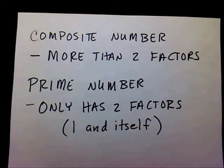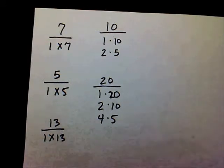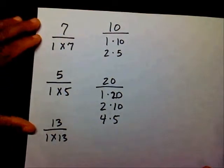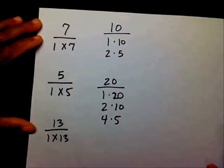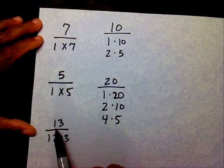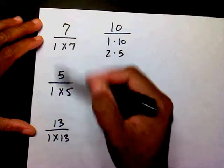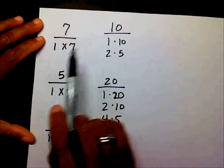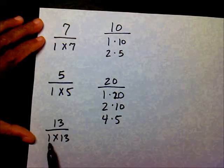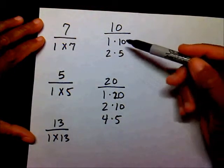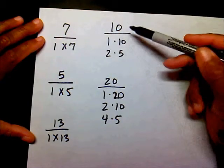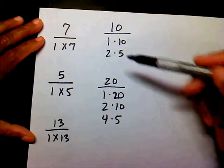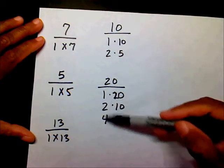I gave you some examples of some factors and prime numbers — some composite numbers and prime numbers. Numbers 7, 5, and 13 were just three of the many prime numbers that you have. They're prime numbers because they only have two factors — only two factors. Composite numbers have more than two factors. I gave you an example of 10, which has four factors, and 20, which has six factors.